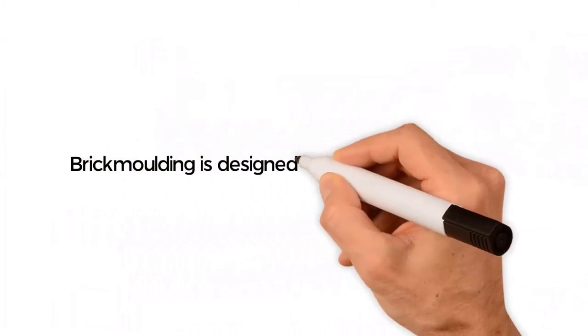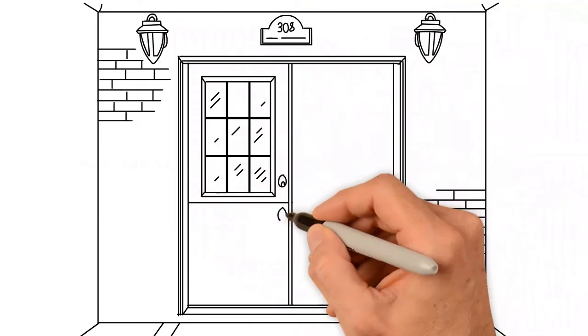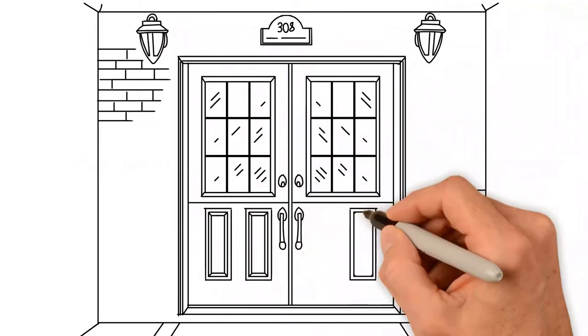Like a picture frame casing, brick molding is designed to perform three duties. First, adding more depth and design, it enhances the look of your new entry doors, so they complement the exterior styling of your home.